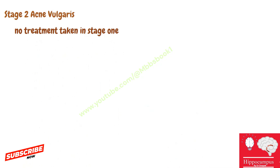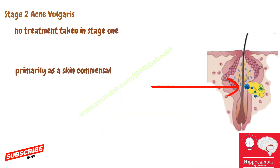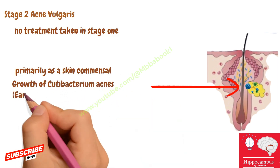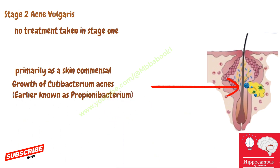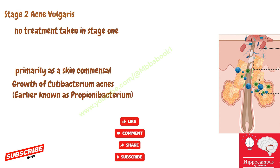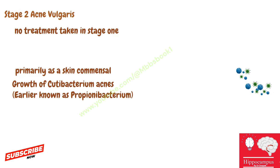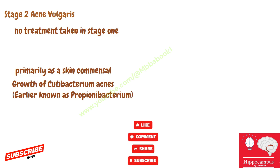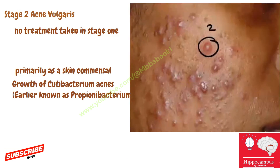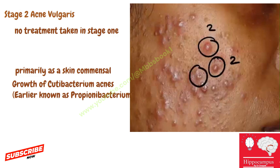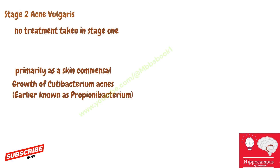In stage two, if treatment was not taken in stage one, the bacteria Propionibacterium acnes (new name: Cutibacterium acnes) grows inside the sebaceous gland. The sebum cannot release through the follicle due to the comedone, so the gland enlarges and eventually bursts, releasing bacteria into the dermis and causing dermal inflammation. The resulting lesions are papules. Stage two always includes stage one lesions as well, since some newer lesions will still be in stage one.